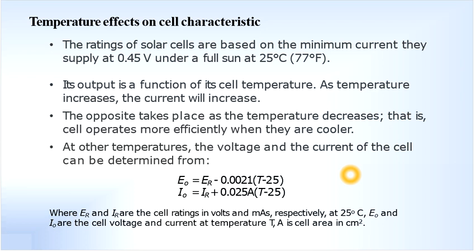Using these relationships, we can determine the output voltage as well as current of the cell at any given temperature. This is the impact of temperature on voltage as well as current of the solar cells.